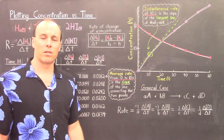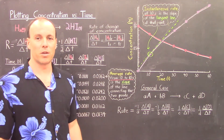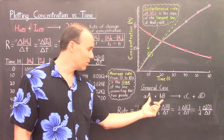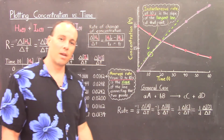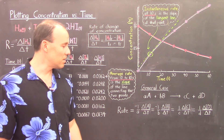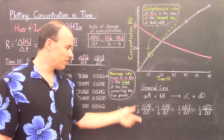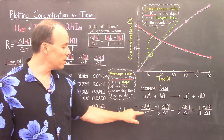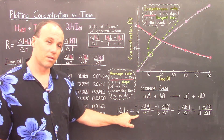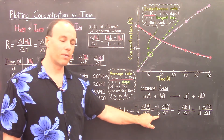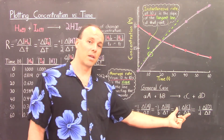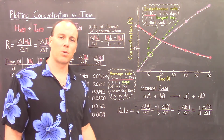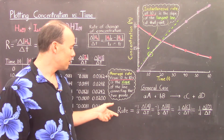In the general case, suppose we have a generic reaction where reactants A and B form products C and D. The rates with respect to these species are related by the following equation: the rate of change of reactant A, preceded by negative one over coefficient a, equals the rate of reactant B preceded by negative one over coefficient b, equals the rate of product C preceded by one over little c, equals the rate of product D preceded by one over little d. All these rate expressions become equivalent and define the rate of the reaction.